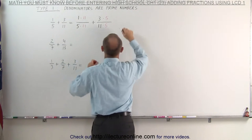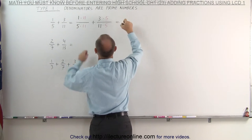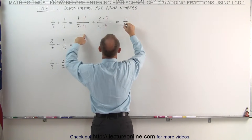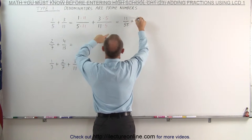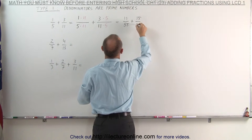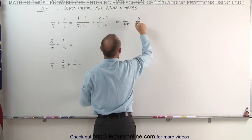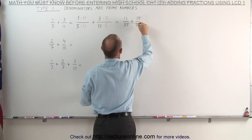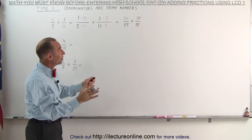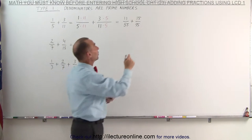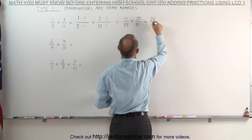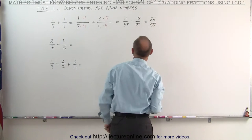So this becomes as follows. This is equal to 1 times 11, which is 11, over 55, plus 15 divided by 55. Since the denominators are the same, we can simply add the numerators. This becomes 26 divided by 55.